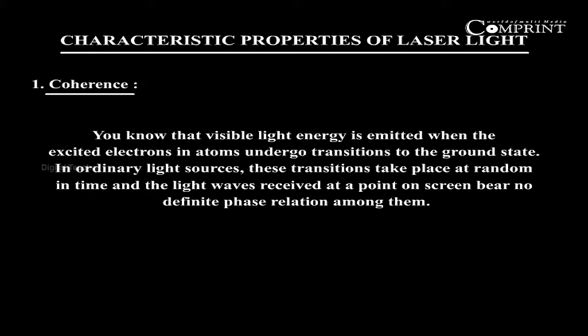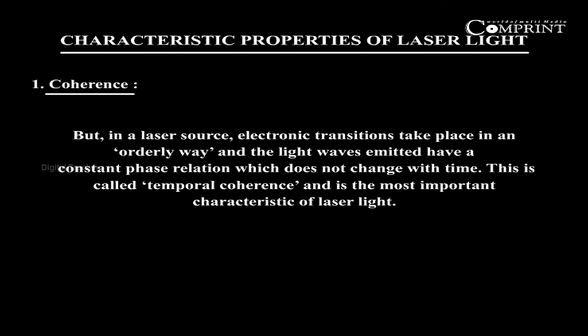Coherence. You know that visible light energy is emitted when the excited electrons in atoms undergo transitions to the ground state. In ordinary light sources, these transitions take place at random in time, and the light waves received at a point on a screen have no definite phase relation among them. But in a laser source, electronic transitions take place in an orderly way and the light waves emitted have a consistent phase relation which does not change with time. This is called temporal coherence and is the most important characteristic of laser light.